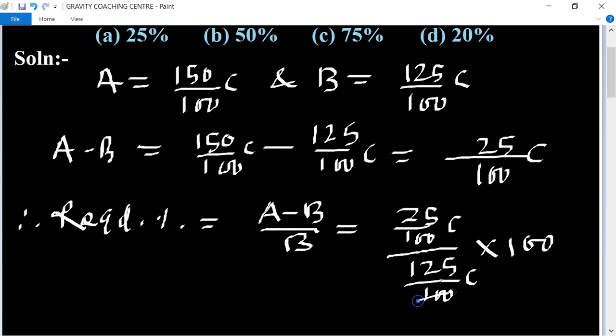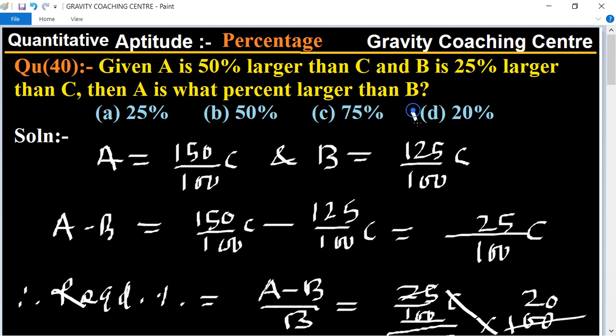100 and 100 cancel, C and C cancel, so 25 divided by 125 equals one-fifth, which is 20 percent. This is the required answer, so option D is the right answer.